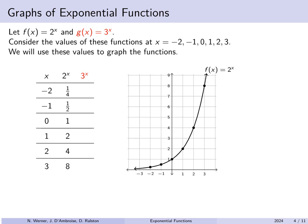Connecting these points gives a curve. Now for 3 to the x: 3 to the minus 2 is 1 ninth, which is smaller than 2 to the minus 2. 3 to the minus 1 is a third, just below 1 half. However, 3 to the 0 is exactly 1 — the same point. 3 to the first is 3, 3 squared is 9, and 3 to the third is 27. Connecting these points gives a curve with the same general shape, but steeper to the right and flatter to the left.